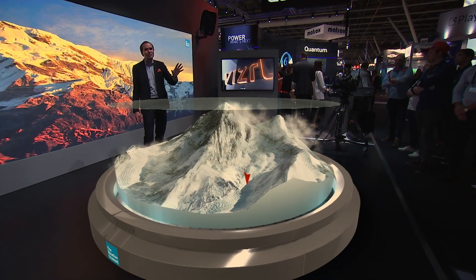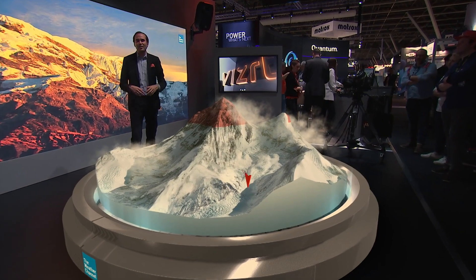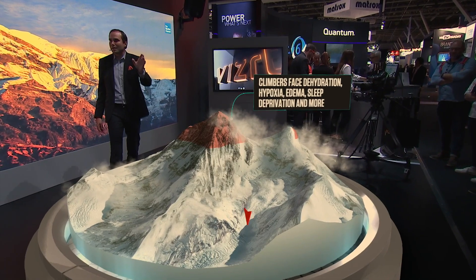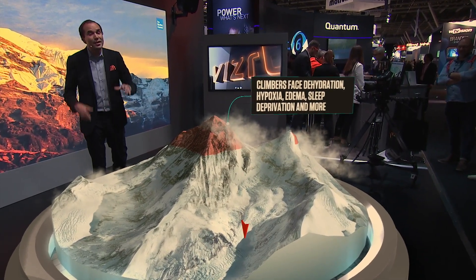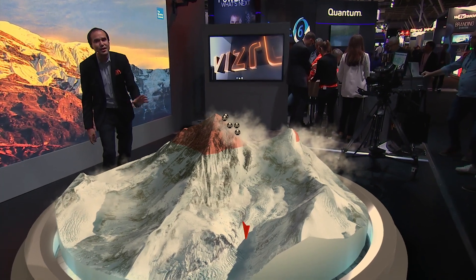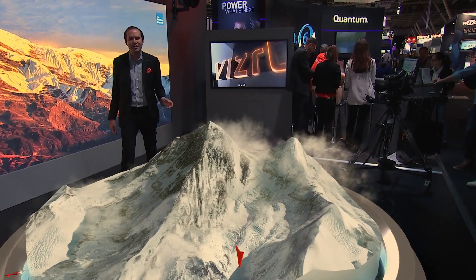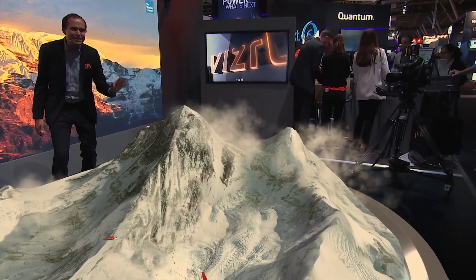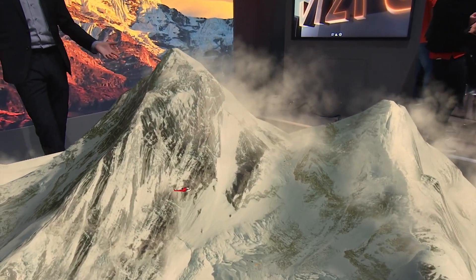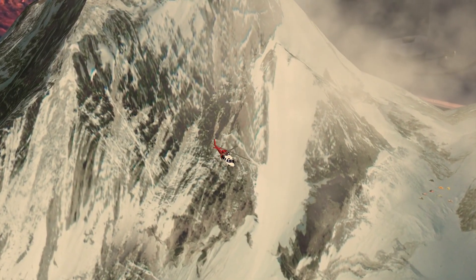Once you make it up to the top — congratulations, but you're not out of the woods yet. There's very thin oxygen, thin atmosphere, and hikers can have all kinds of problems such as dehydration, hypoxia, edema, and sleep deprivation. If you get into trouble you have to rely on your teammates to get you down, because rescue operations cannot come up to these high elevations. There's a little helicopter coming in — these helicopters can make nice rescues to the base camp, but not much higher because the atmosphere becomes too thin to give them lift, which is very dangerous for everybody.